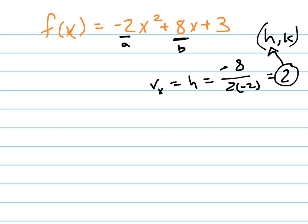To find my k, I could plug that back in. Let's just do this real quick. If I plug that back in, I would get negative 8 plus 16 plus 3, because I plugged in 2 everywhere, which is 11. So 2 comma 11 is my vertex.